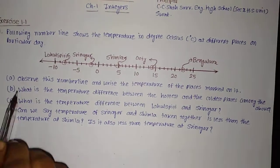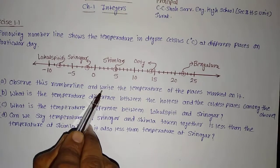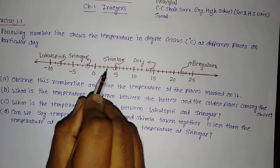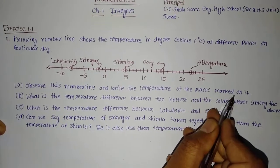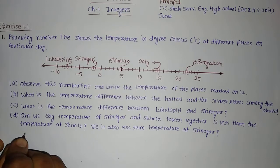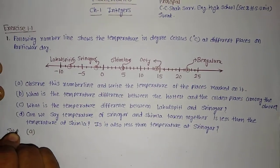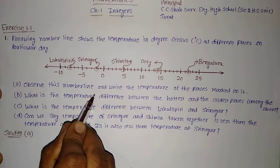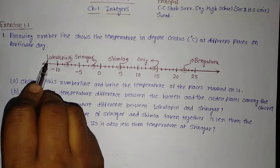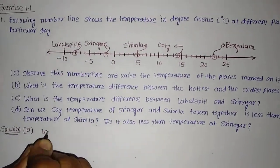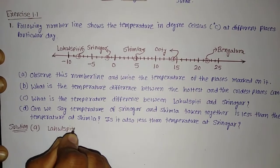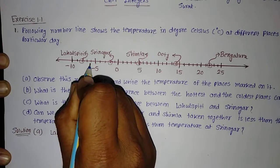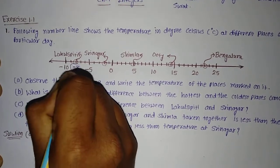Let us read the question and try to solve them. Part A: Observe this number line and write the temperature of the places marked on it. Solution for A. The first place marked is Lahulspiti. How much temperature is there? We have already seen — it is minus 5, then minus 6, minus 7, and minus 8. So the temperature of Lahulspiti is minus 8 degrees Celsius.